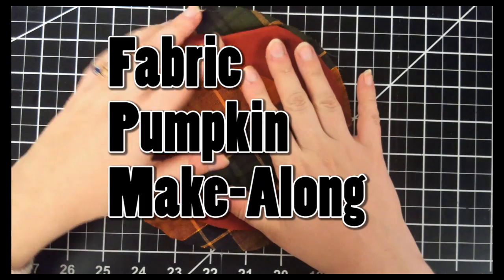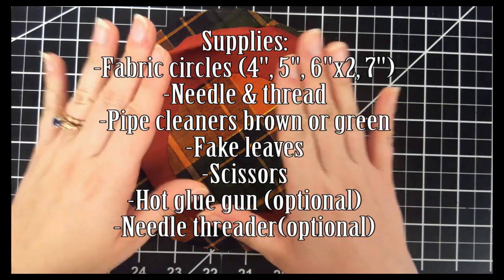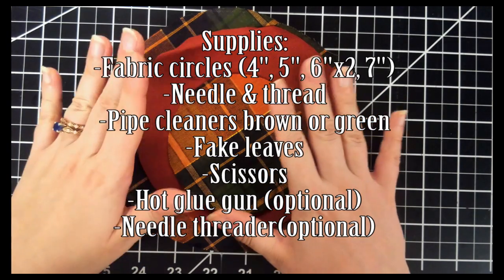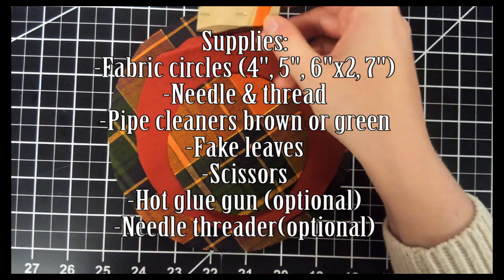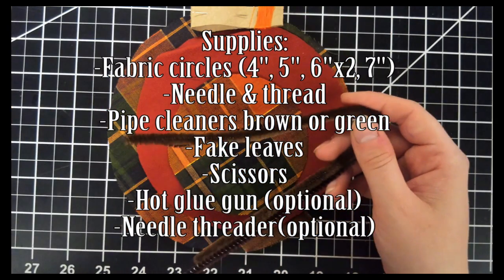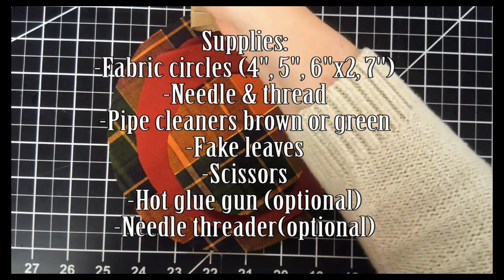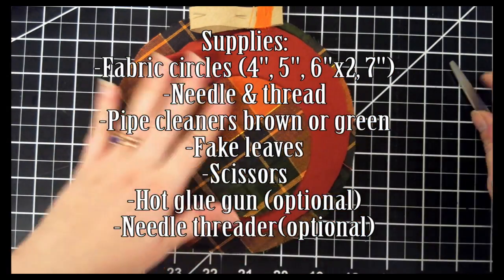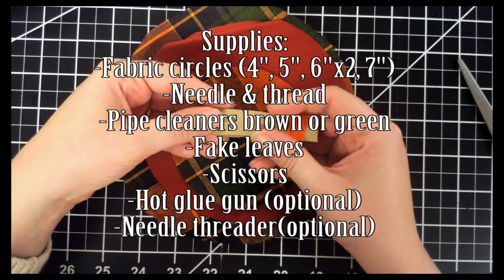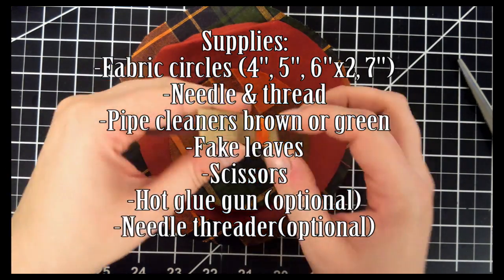Hello! Welcome to our fabric pumpkin event. In your kit you should have some pre-cut fabric circles, your needle and thread, some pipe cleaners, and then some fake leaves. You might want to get some scissors, a needle threader if you need some help threading needles, and a hot glue gun is optional.